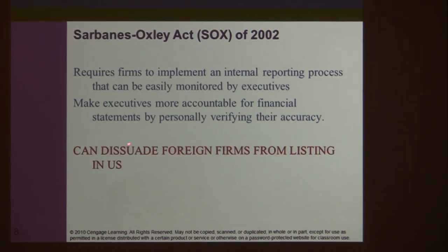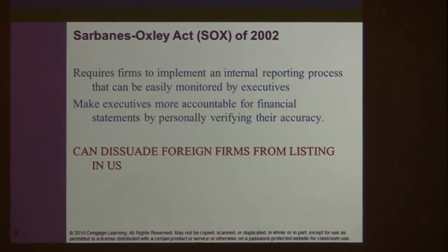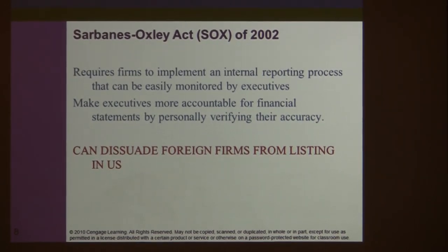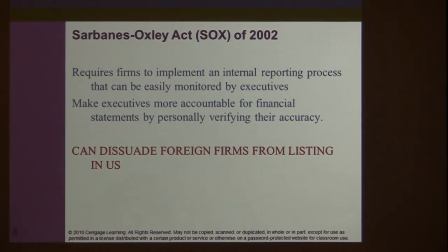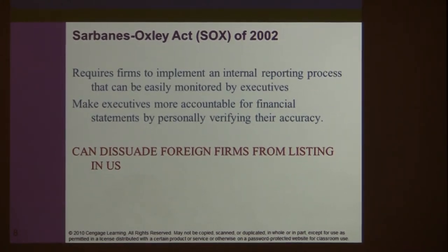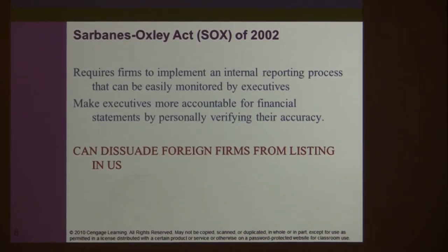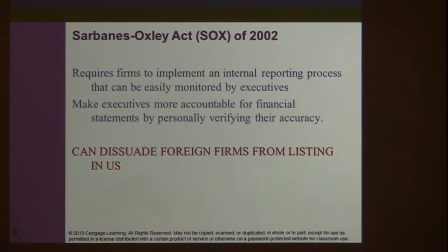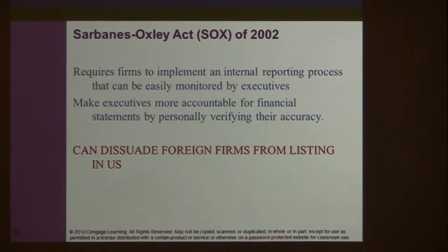The Sarbanes-Oxley Act increased accounting transparency for U.S.-based firms. However, the downside is that some firms that would have done an IPO decided not to, to avoid higher reporting requirements and expenses. Instead, they chose to be acquired by a larger company. Some foreign firms also decided not to list in the U.S. mainly because of the higher reporting requirements of Sarbanes-Oxley.